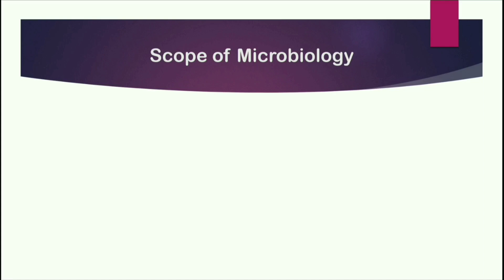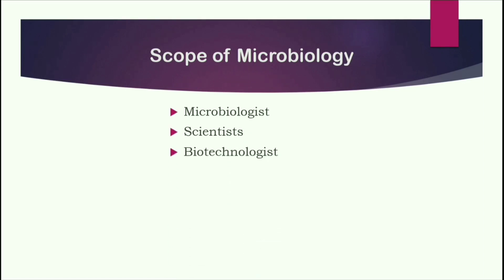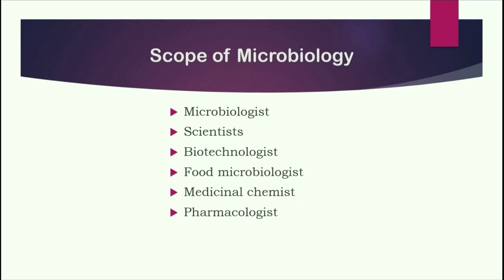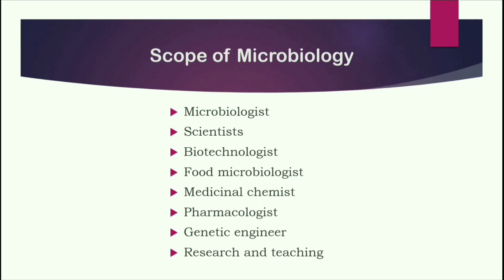There are many career scopes in the field of microbiology due to advancement in science and technology. You can start a career as a microbiologist, scientist, biotechnologist, food microbiologist, medicinal chemist, pharmacologist, genetic engineer, or in research and teaching. Undergraduates in microbiology can work at science labs and pathological labs. Those with a postgraduate degree can work in microbiology-based industries like pharmacy, dairy, and enzymes. Students who complete a PhD can take up teaching in universities and postgraduate colleges, and can also pursue postdoctoral research.